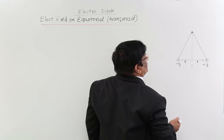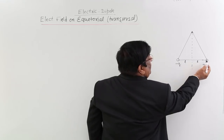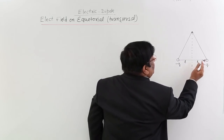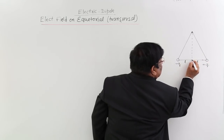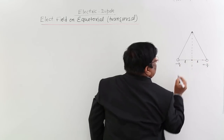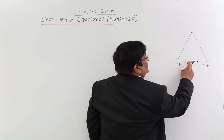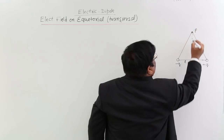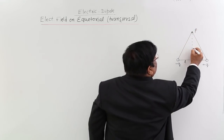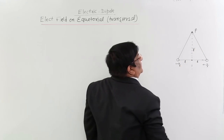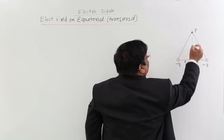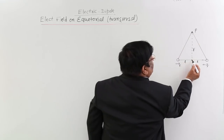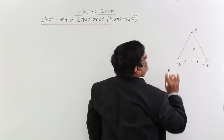Now, from which point should we measure R — from the positive charge or from the negative charge? The answer is neither of the two. We should take the center. All distances will be measured from the center, and the distance of point P from the center of the dipole is R.